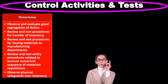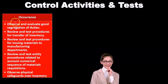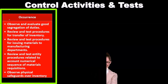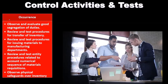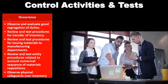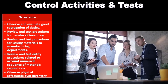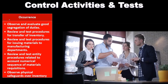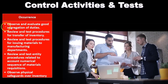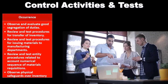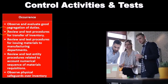Now we look at control activities and tests. For the assertion of occurrence, we're going to observe and evaluate good segregation of duties. When thinking about controls, we first want to know whether the controls are set up properly in plan and theory, and then whether they've actually been implemented — those are two completely different things. You can have good controls but poor implementation. So we want to make sure there is actual occurrence of the controls by observing good separation of duties.